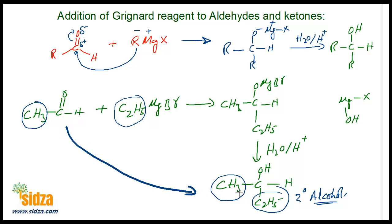If you look at this reaction overall, the net reaction is the addition of the Grignard's reagent. This is the net reaction: you start with an aldehyde, add the Grignard's reagent first, and then do the hydrolysis. The net result is that an alkyl group is attached to the carbon and hydrogen is attached to the oxygen.